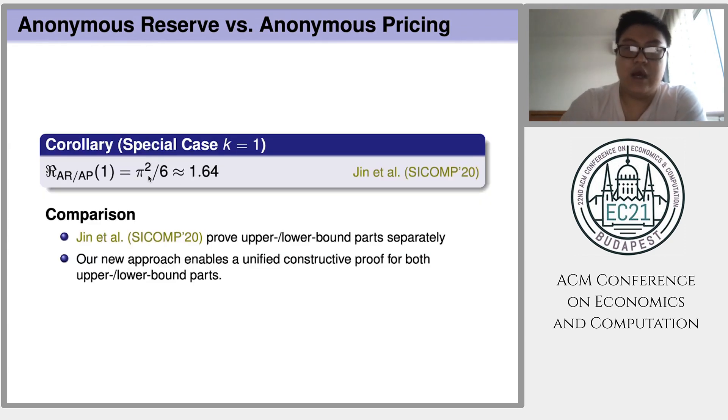Another interesting thing of our result is that for the special single-item case, our proof will re-derive one of the main results of this SICOMP 20 paper. That is, if in the single item setting, the tight revenue gap between anonymous reserve and anonymous pricing is exactly pi squared over 6.